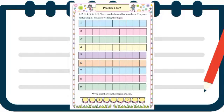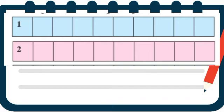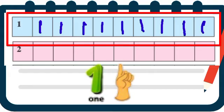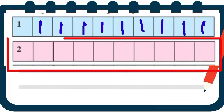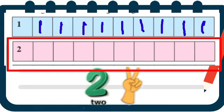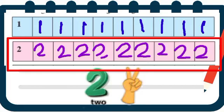First, number 1. Let's write number 1 — ekha aankhya lihniyacha sarav kara. Next, this is the number 2. 1 and 1 make 2 — ek aani ek milun bantil 2. Chala tar 2 haa aankha lihniyacha sarav karu ya. Rikame boxes madhe 2 aankha lihuyaa.